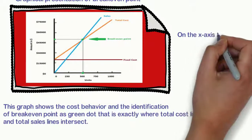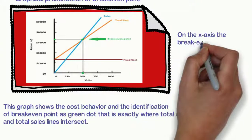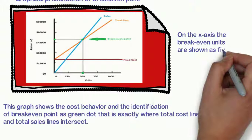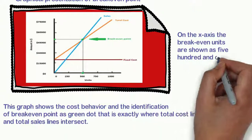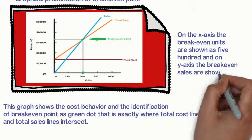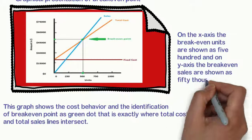On the x-axis the breakeven units are shown as 500, and on the y-axis the breakeven sales are shown as $50,000.